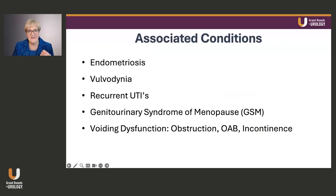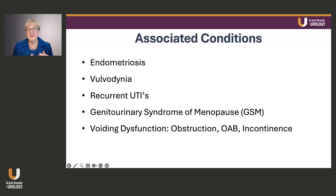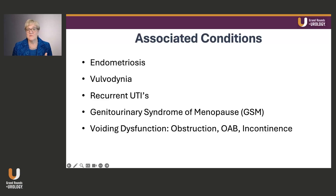Many patients have associated conditions that can mimic and sometimes worsen IC and bladder pain syndrome symptoms. These include endometriosis, vulvodynia, recurrent urinary tract infections, genitourinary syndrome of menopause, and voiding dysfunctions such as obstruction, incontinence, and overactive bladder. You need to recognize and treat all of these conditions in order to get optimal symptom improvement.